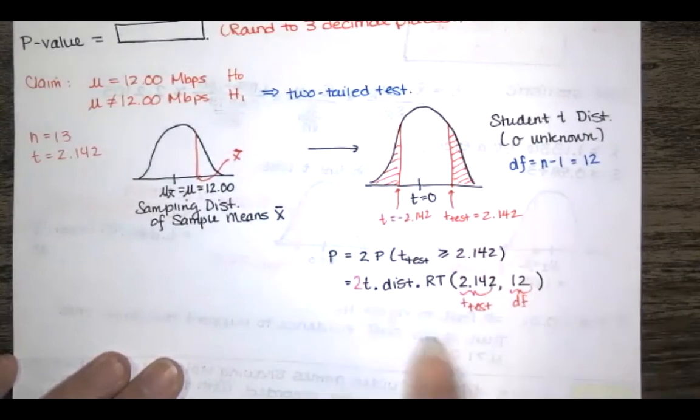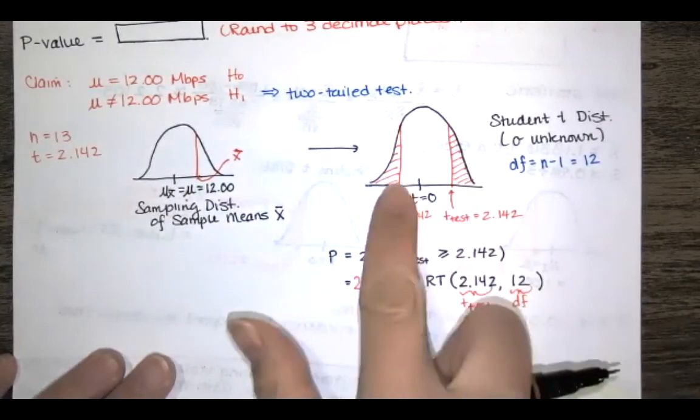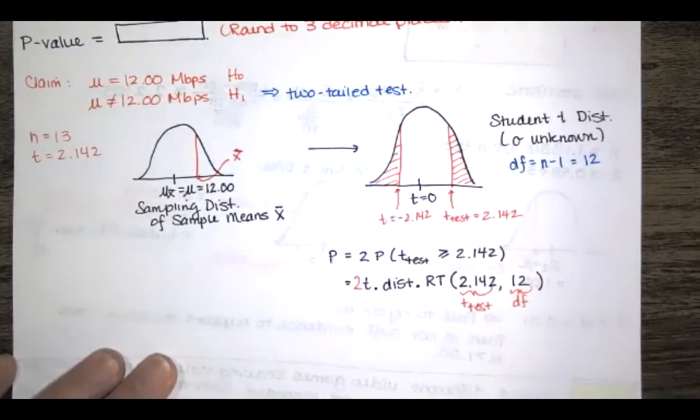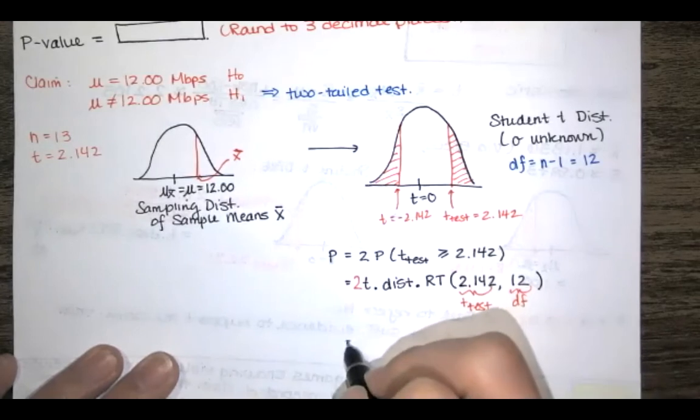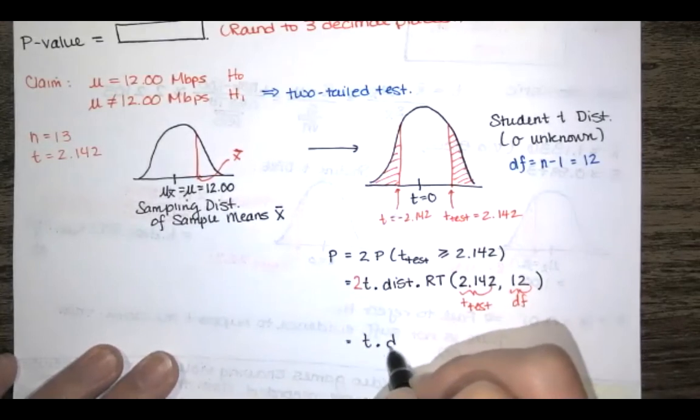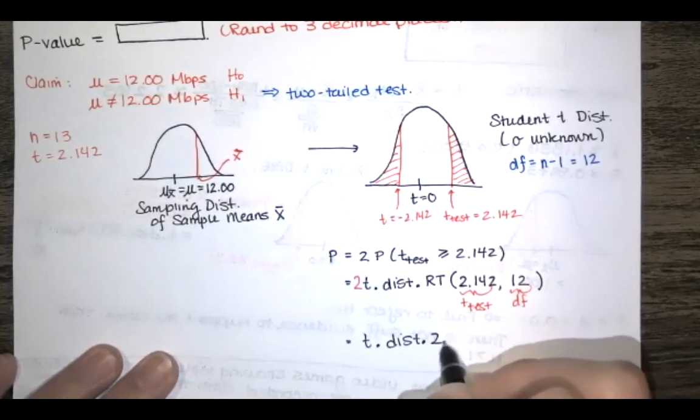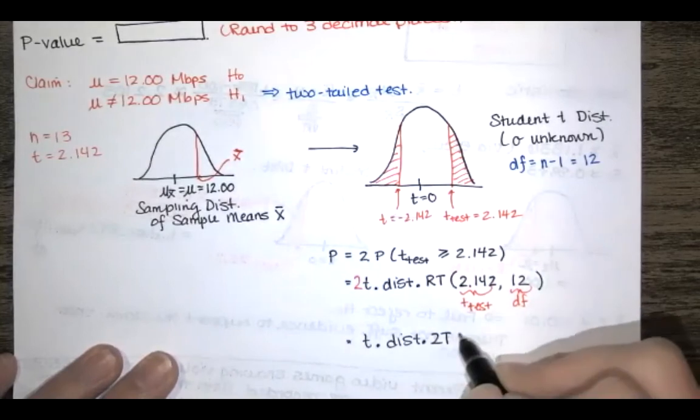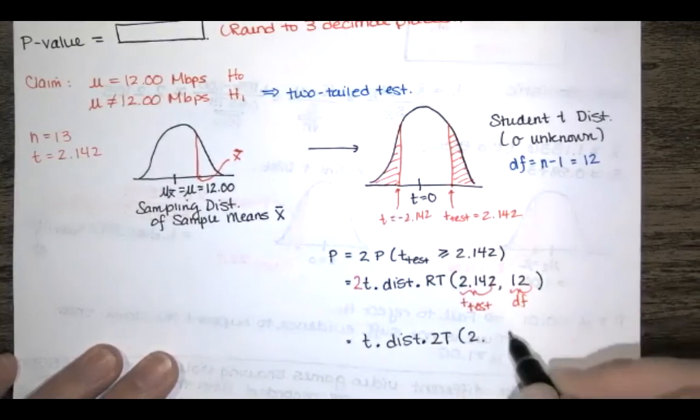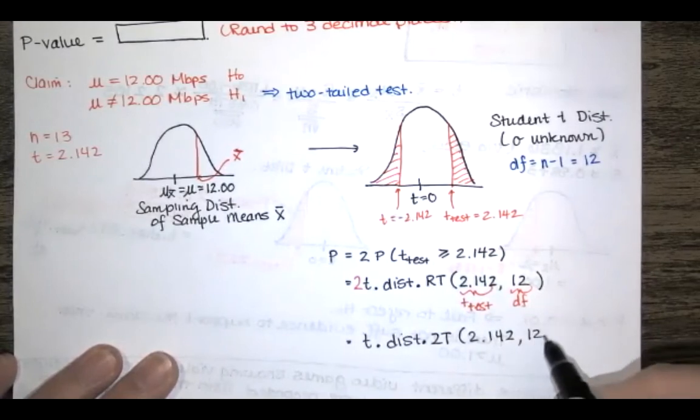And if you multiply that by 2 that's going to give you twice that area which is our p-value. Now there's another possibility because it's a two-tailed test excel gives you this function t.dist.2t for two tail and you'll still enter the test statistic t and the degrees of freedom.